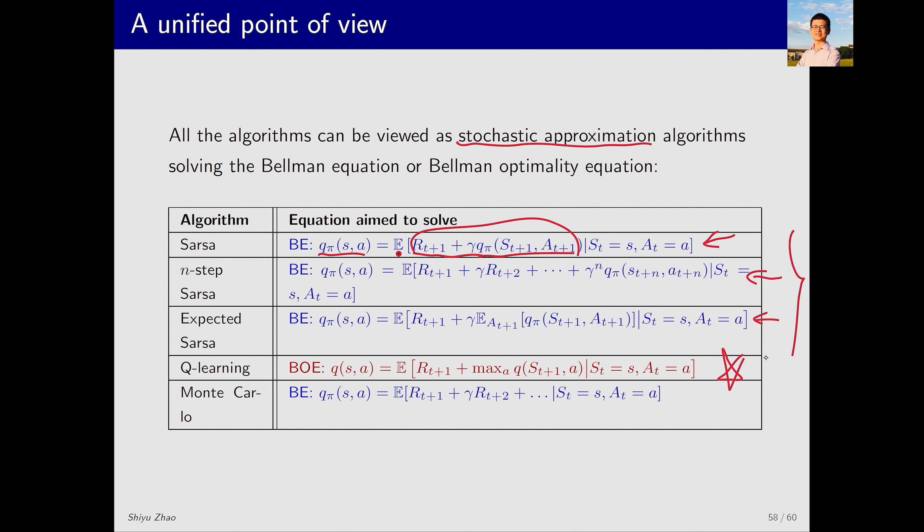I forgot to mention that these TD methods are about solving a Bellman equation for a given policy. But how can I search for optimal policies? It's actually by combining the policy evaluation step with the policy improvement step. This combination allows us to obtain an iterative algorithm that can search for optimal policies.